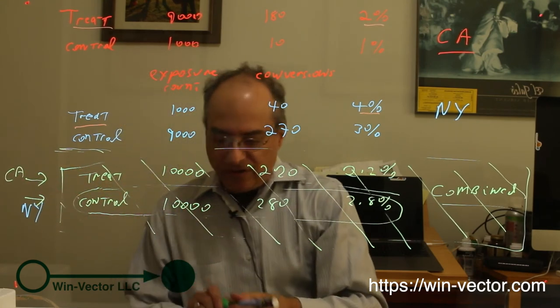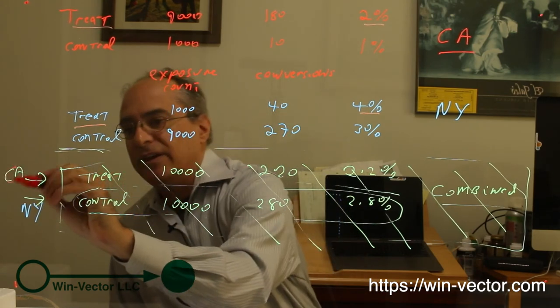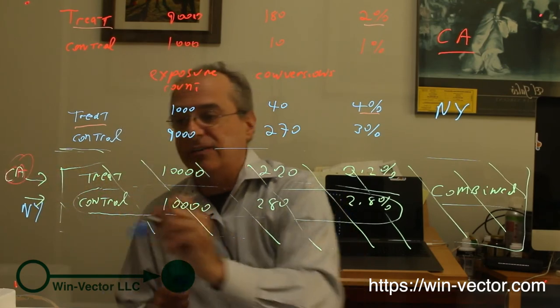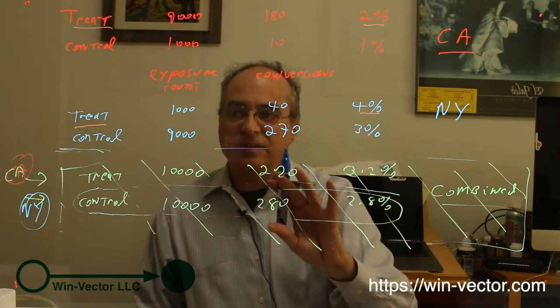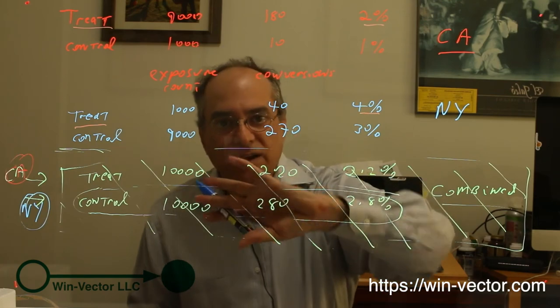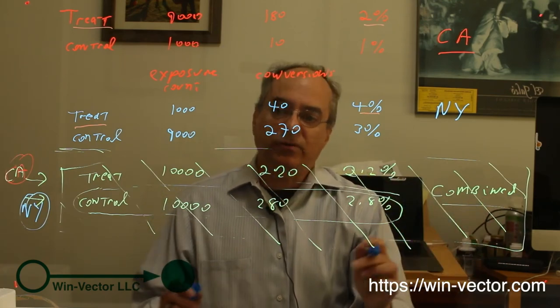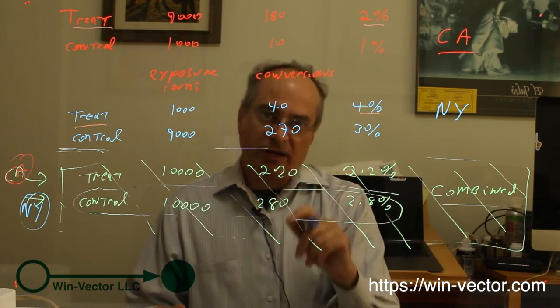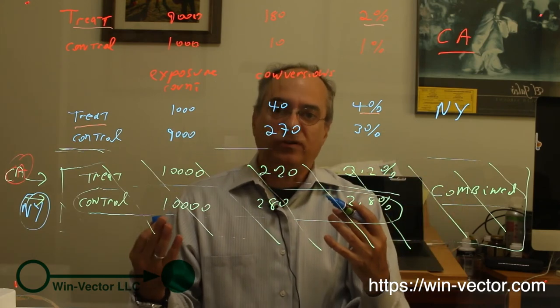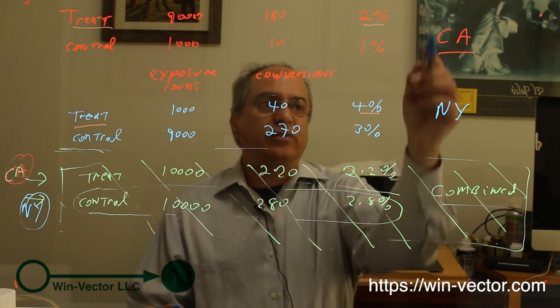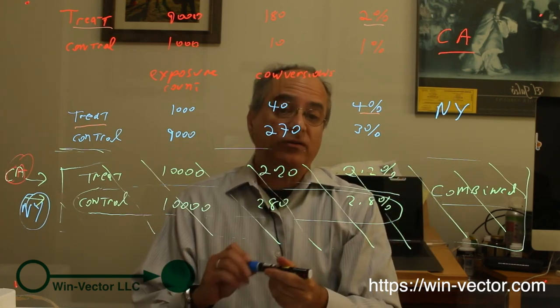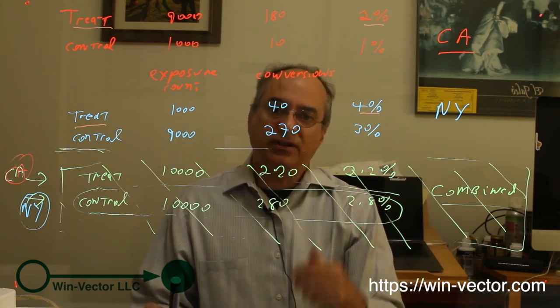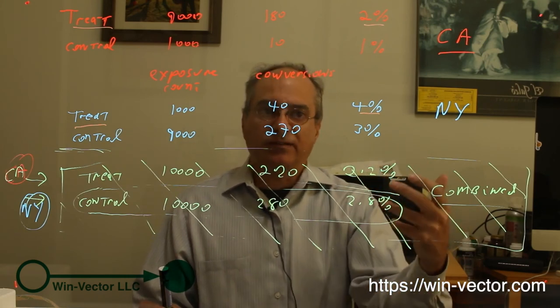So this is literally a confounding variable that we should not have in a proper A-B test. If these two sub-tests didn't even exist, this aggregate test would still be wrong because what differs from treatment and control is two things: our choice of web page, which was our experimental design, and also this geography, which turns out to be important. So we can't tell whether this composite test is measuring the effects of geography or the effects of the web page.